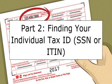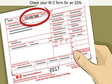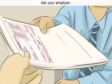Part two: finding your individual tax ID, SSN or ITIN. Step one, check your W-2 form for an SSN. Anyone with a Social Security Number, SSN, can use it as a tax ID. Step two, ask your employer. If you do not have any W-2 forms, you can request a copy from any current or past employer. All employers are required to keep this information for at least four years after you leave the company.